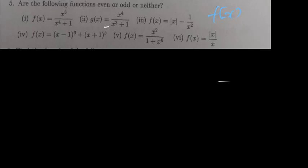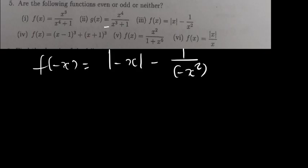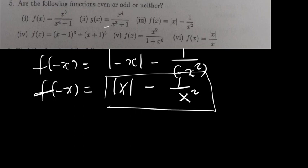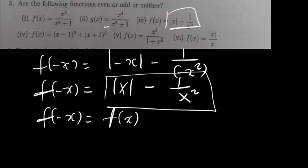Now let's look at the next example involving a modulus function. f(-x) equals the modulus of negative x, minus 1, over negative x squared. Anything inside a modulus comes out as positive, so the modulus of negative x is just the modulus of x. Negative x squared is x squared. So f(-x) equals f(x). Therefore, the function is even.